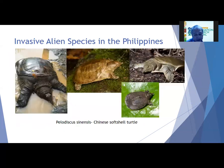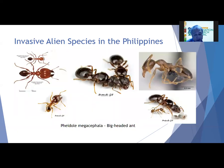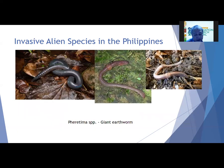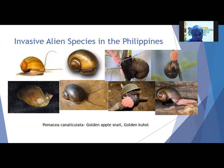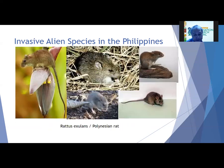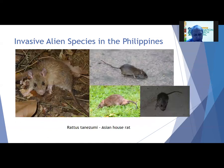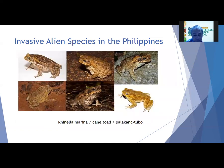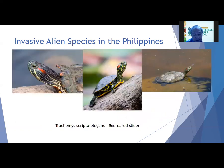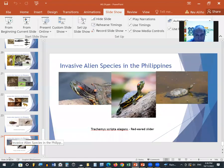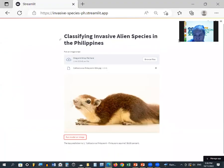Continuing the species parade: the longhorn crazy ant, the Chinese softshell turtle, the big-headed ant, the giant earthworm, the bell jellyfish, the golden kuhol, the janitor fish, the Polynesian rat, the Asian house rat, the cane toad or palakang tubo, the rice black bug, and lastly, the red-eared slider.